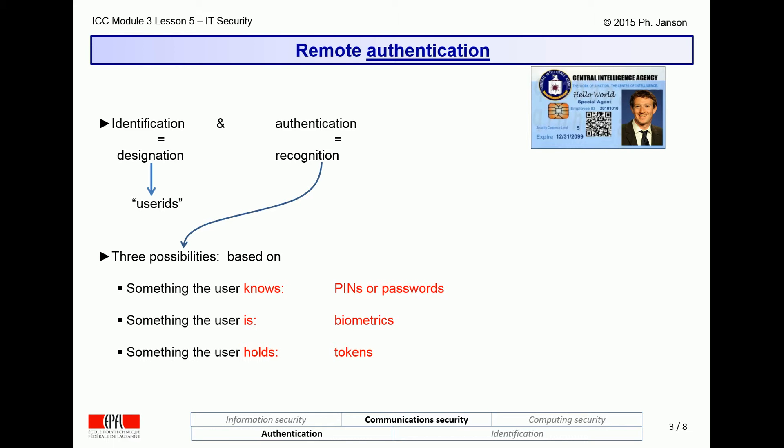Authentication is the process by which a computer — or in fact a person — can convince themselves of the identity, that is, the user ID or the name, of a user contacting them from across a network, a telephone line, or in fact in front of us.